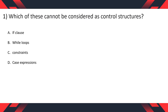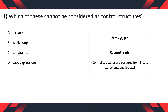Question 1: Which of these cannot be considered as control structures? A. If Clause, B. While Loops, C. Constraints, D. Case Expressions. The correct option is C, Constraint.